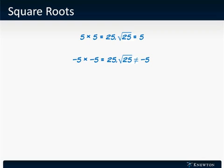Negative five times negative five is also twenty-five, but the square root of twenty-five is not negative five, it's only five, it's defined to be positive or zero.